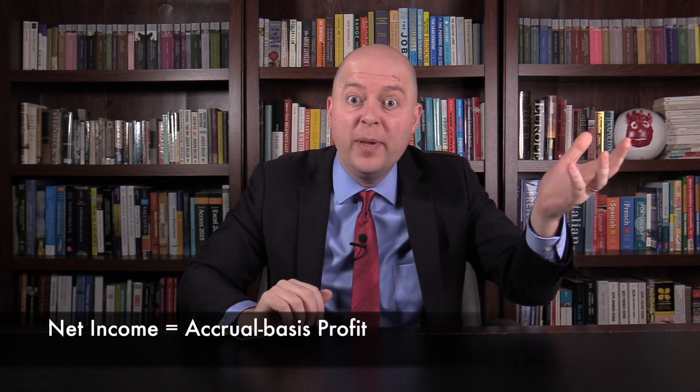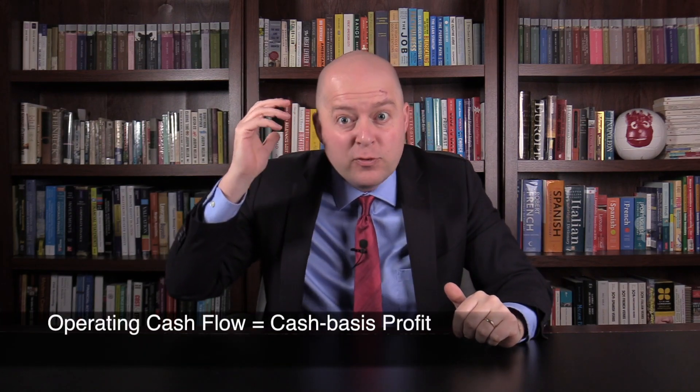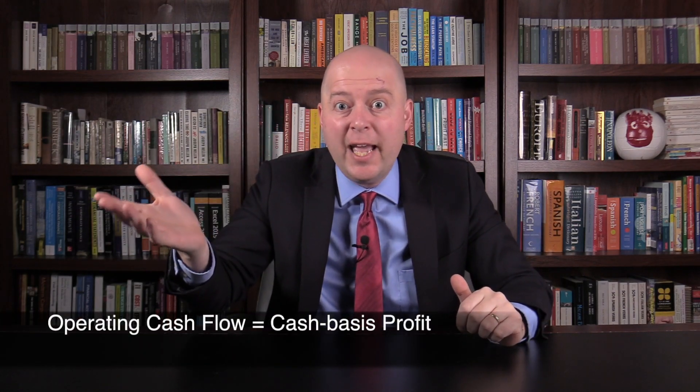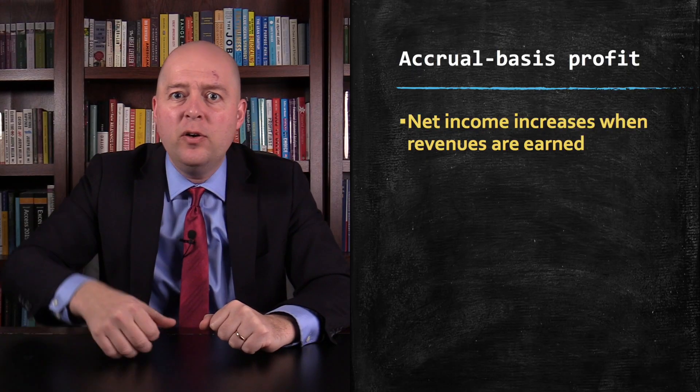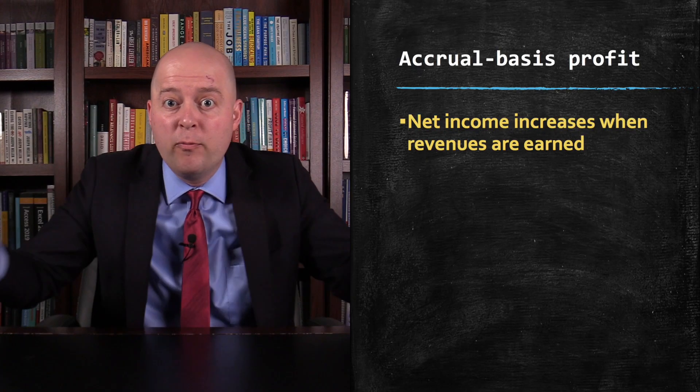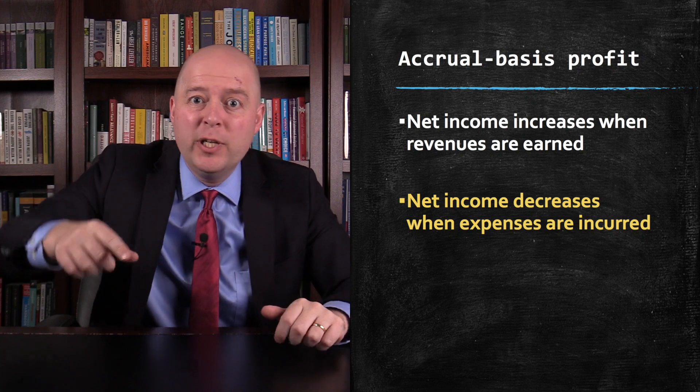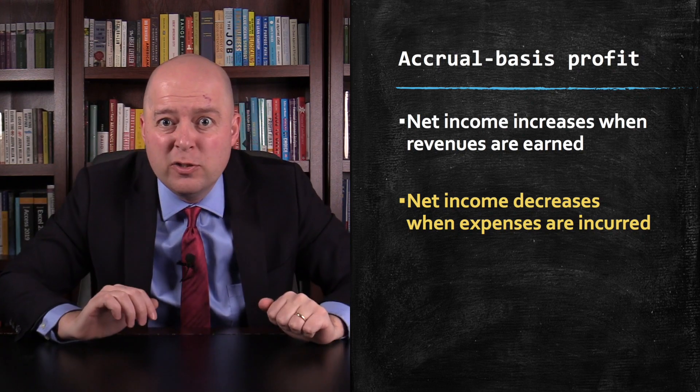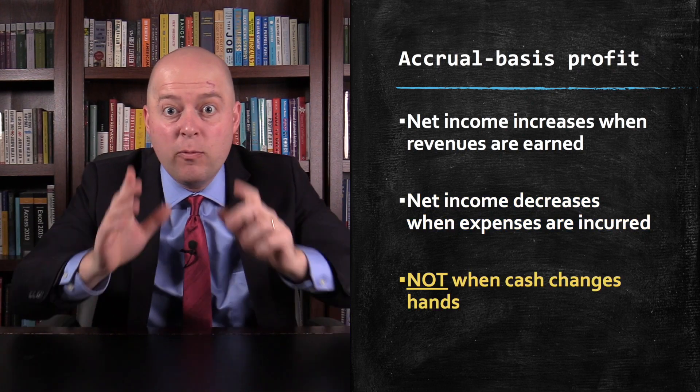Thus, you could view net income as a company's accrual basis profit and operating cash flow as a company's cash basis profit. But what does accrual basis profit even mean? It means that net income increases when revenues are earned and decreases when expenses are incurred, not necessarily when cash changes hands. In other words, cash coming in or out has no effect on a company's net income.